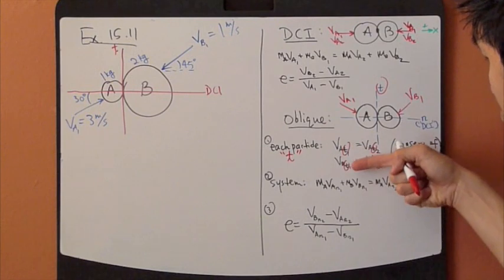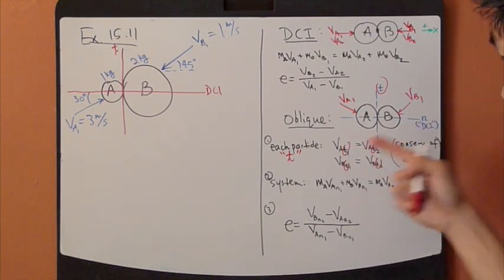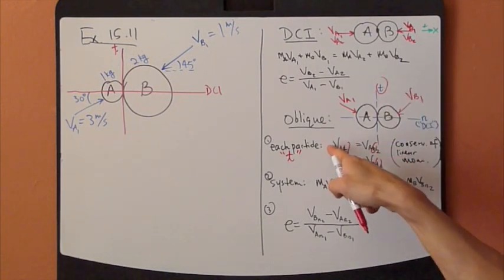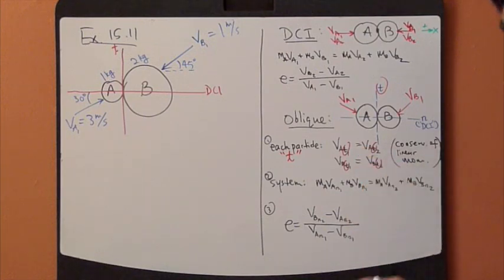So for each particle, the tangential direction velocity before and after is the same. It is conserved.